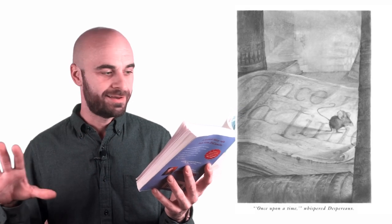Despero looked down at the book, and something remarkable happened. The marks on the pages, the squiggles, as Merlot had referred to them, arranged themselves into shapes. The shapes arranged themselves into words, and the words spelled out a delicious and wonderful phrase, once upon a time.